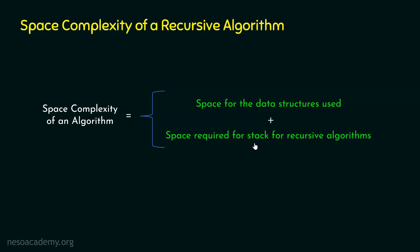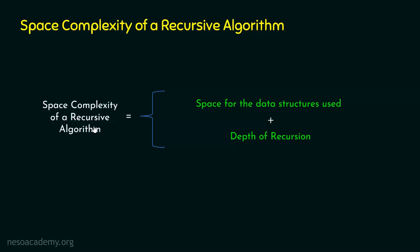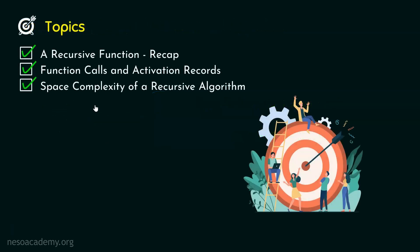The space required for the call stack is the same as the maximum number of activation records at a time within the call stack, which equals the depth of function calls. For a recursive algorithm, the depth of function calls is also called the depth of recursion. So space complexity of a recursive algorithm equals space for data structures used (if any) plus depth of recursion. This is the formula for calculating the space complexity of a recursive algorithm.